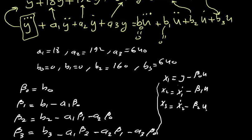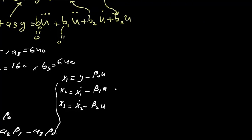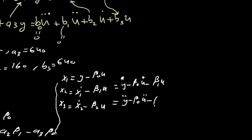Taking the derivatives: x1̇ = ẏ − β0·u̇ − β1·u, and x2̇ = ÿ − β0·ü − β1·u̇ − β2·u. These derivative relationships are used to build the state equations.